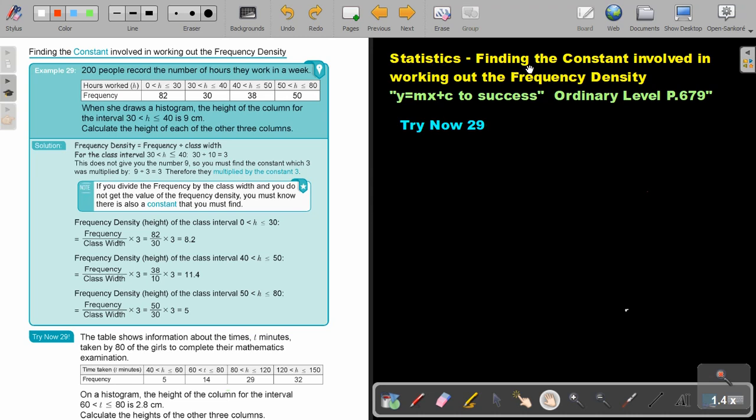Statistics. Finding the constant involved in working out the frequency density. You will find this on page 6, 7, 9 in the Namibia Ordinary Level Mathematics textbook y equals mx plus c to success. Finding the constant involved in working out the frequency density.